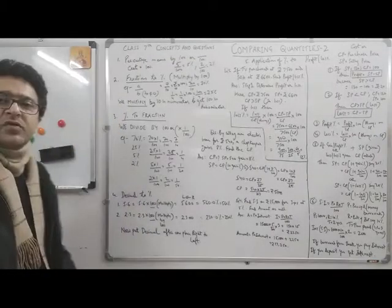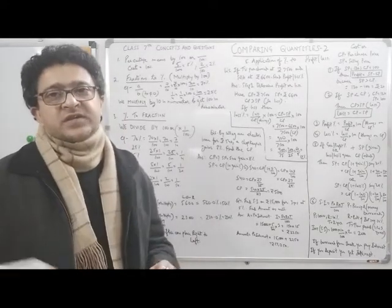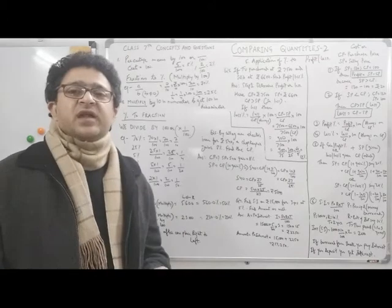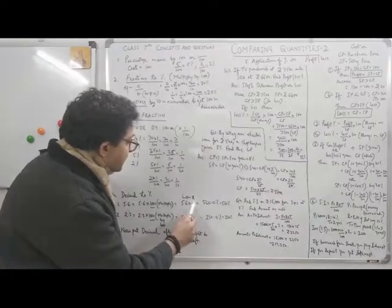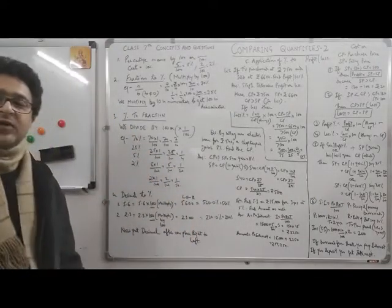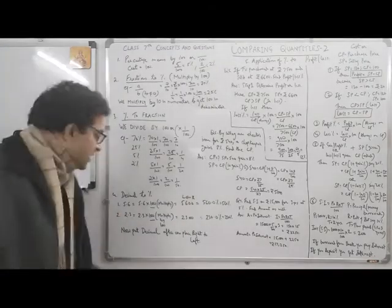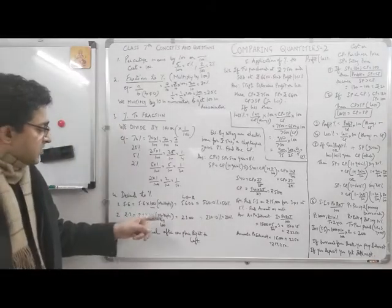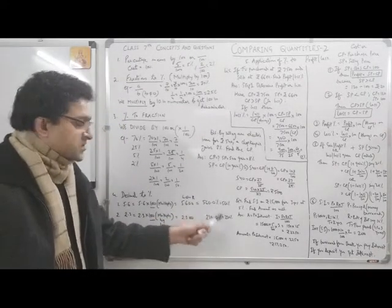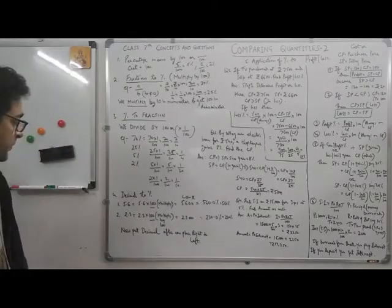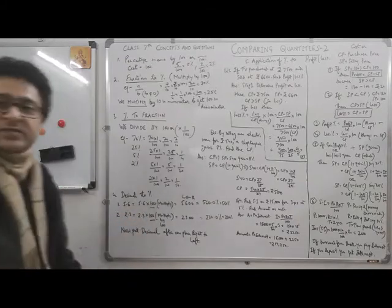To summarize the decimal-to-percentage process: multiply the decimal by 100, then count the digits to the right of the decimal point. There is one digit, so from right to left, place the decimal after one digit. So 5.6 becomes 560%, placing the decimal after one digit from the right gives 56.0% — more simply, 5.6 × 100 = 560%. Similarly, 2.3 × 100 = 230, and applying the same logic it becomes 230%.